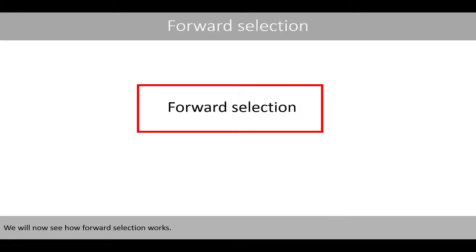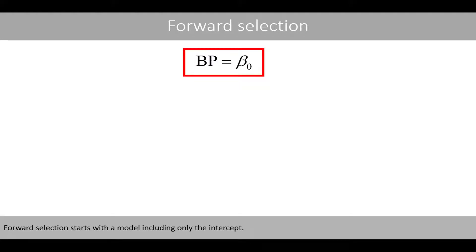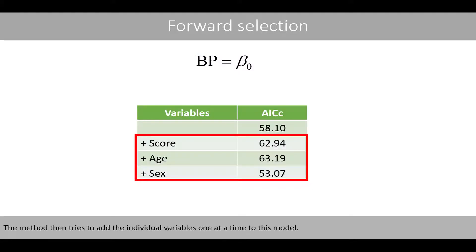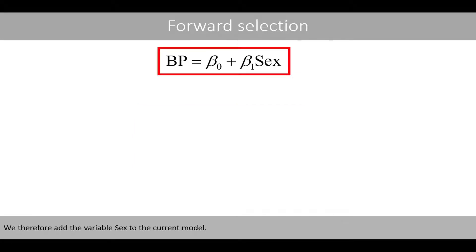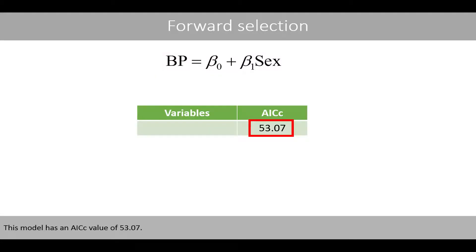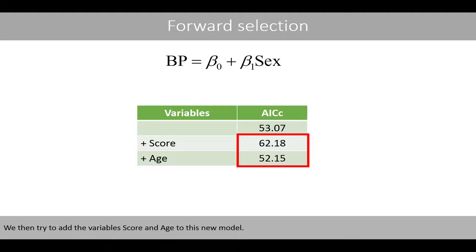We'll now see how forward selection works. Forward selection starts with the model including only the intercept. The method then tries to add individual variables one at a time to this model. We see that if we add the variable sex to the current model, that will result in a model which has a lower ISE value than the current model. We therefore add the variable sex to the current model. This model has an ISE value of 53.07. We then try to add the variable score and age to this new model. Since age results in the lowest ISE value, it is added to the model.